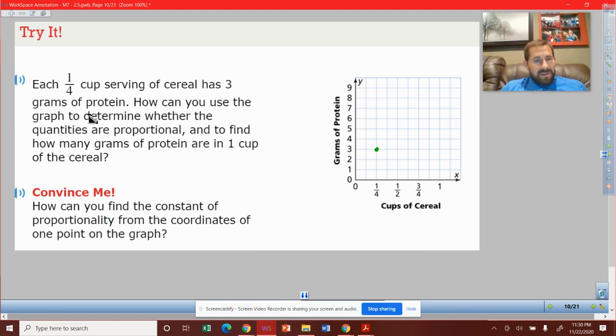We can use the information. Every one-fourth is another three grams. I've gone from one-fourth to one-half. That's just another fourth. So now I'm up to six. And then I add another fourth. Now I'm up to nine.